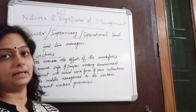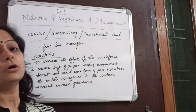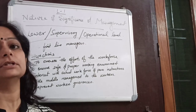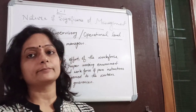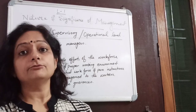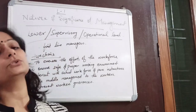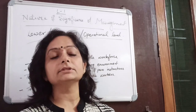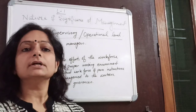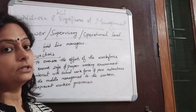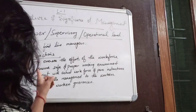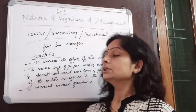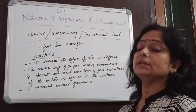The last level is lower level management, also known as the supervisory or operational level. They are the first-line managers, directly in contact with the actual workforce. Supervisors, foremen, and floor managers all belong to this level. This level is responsible for interacting with the actual workforce. Their functions include overseeing the efforts of the workforce — ensuring the work being done by employees on the ground is properly monitored.